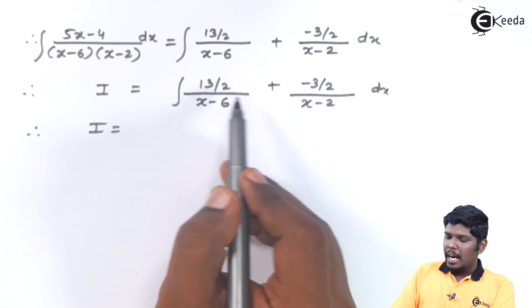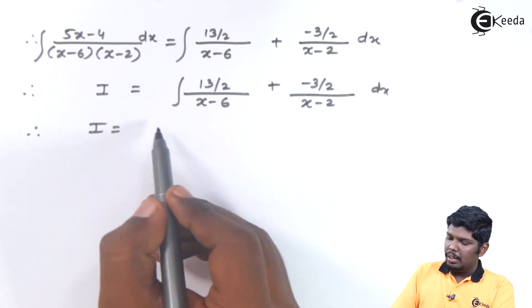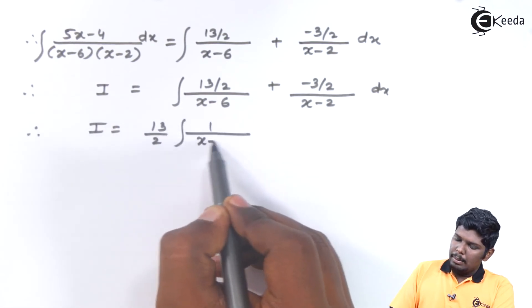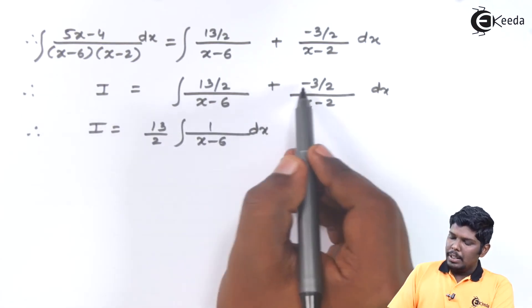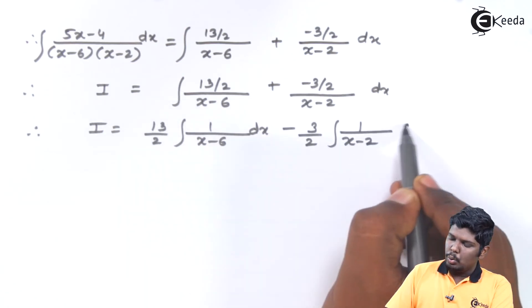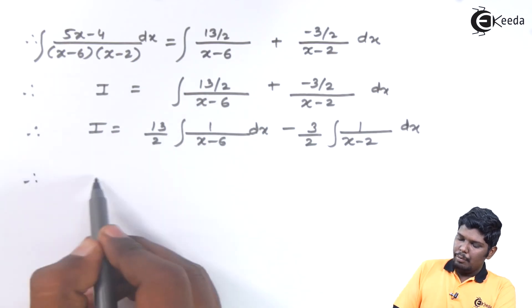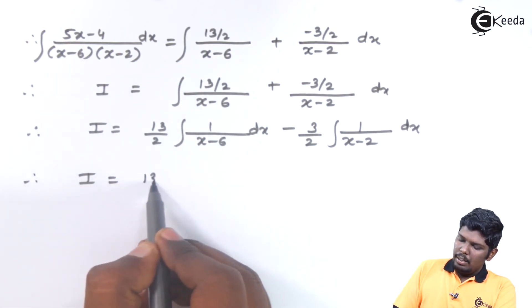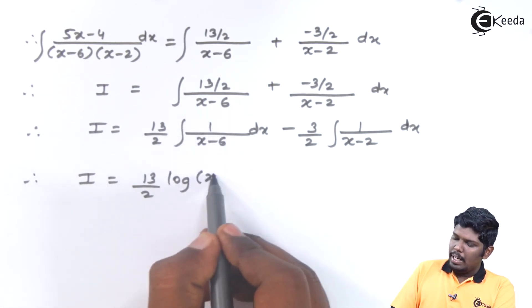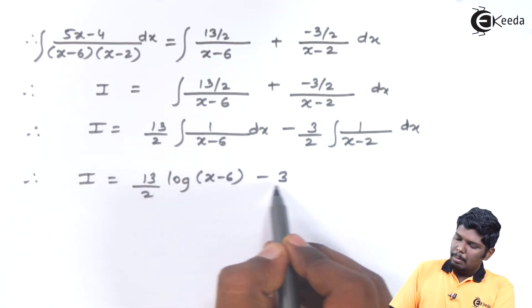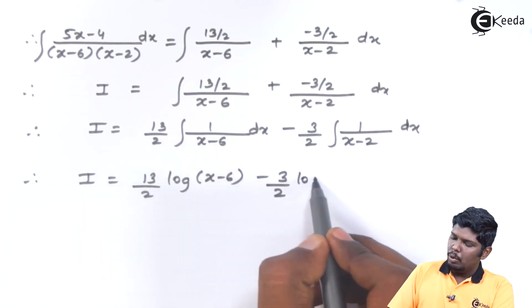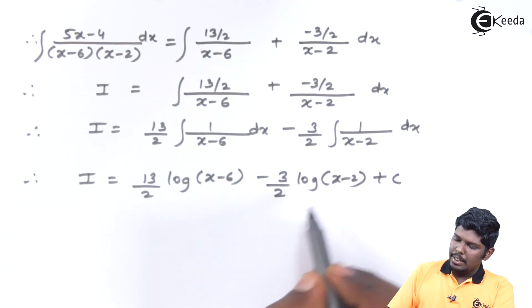This is our integral i which is now equal to integral 13 by 2 upon x minus 6 plus minus 3 by 2 upon x minus 2 dx. Now separating integrals and taking constant outside the integral will give you 13 upon 2 integral 1 upon x minus 6 dx minus 3 upon 2 integral 1 upon x minus 2. Therefore i will be 13 upon 2 log of x minus 6 minus 3 upon 2 log of x minus 2 plus c.